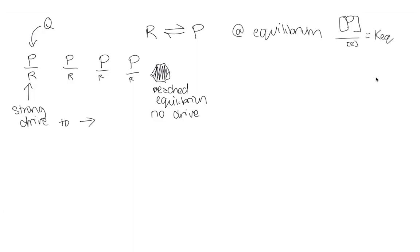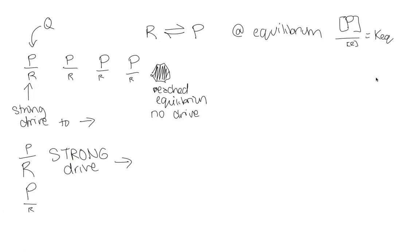What if you started with even more reactants? Now you would have really strong drive, and you have further to go before reaching equilibrium — there's more drive, you're going to release more energy along the way. But what if you start with too much product compared to reactants? Well, now you're actually going to have a drive to the left — you're going to start losing your products in order to make some more of your reactants.